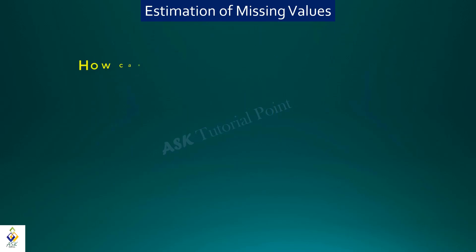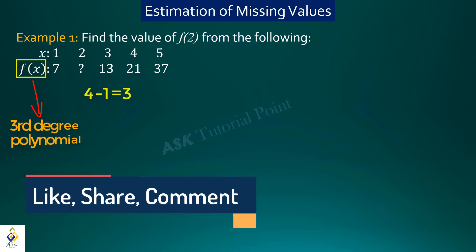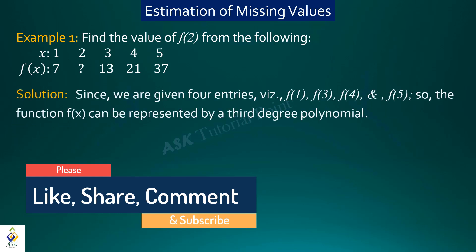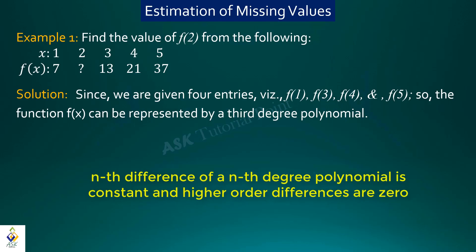Finally, let's discuss how we can estimate missing values from a given distribution. Let's start by solving Example 1. Here, argument 2's corresponding entry is missing, so we are asked to find the value of f(2). We are given 4 entries, so the function f(x) can be represented by a third degree polynomial. We apply the Finite Difference Fundamental Theorem: the nth difference of an nth degree polynomial is constant, and higher-order differences are zero.